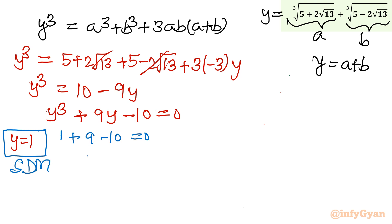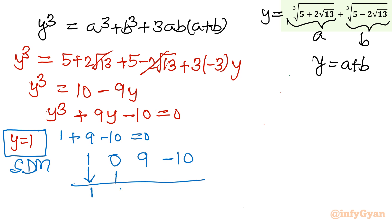Write all the coefficients: 1, 0 (the y² term is absent), 9, −10. Put the dividing value 1. Bring down 1. Then 1×1 = 1; 0+1 = 1. Then 1×1 = 1; 9+1 = 10. Then 10×1 = 10; −10+10 = 0. So here we have the coefficients of the remaining quadratic.